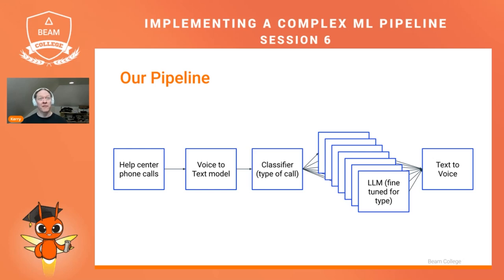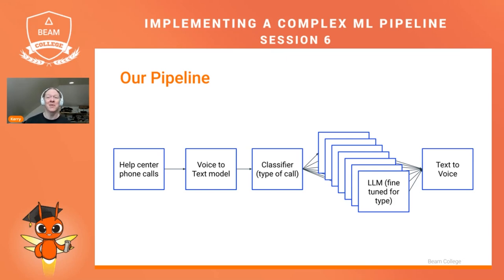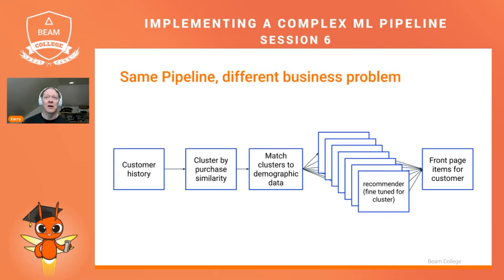We did it for a fake set of phone calls for a help center — very formulaic and specific — transforming them to text, classifying them, running inference, getting some amusing replies because we don't actually have fine-tuned models, and then turning that back into voice. We can demonstrate this pipeline runs successfully even with relatively constrained hardware. Let's think about how this pattern could solve other business problems just by changing the models and the model handlers and the data that flows through the system, without really changing the graph or the approach.